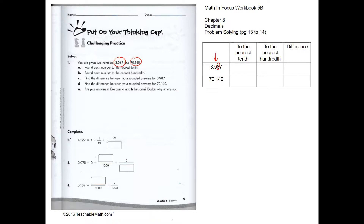So it is 4.0. Now to get to the nearest hundredth — this is the hundredths place — we look at the thousandths place. Since 7 is more than 5, we go up to the next nearest hundredth, so this will be 3.99.